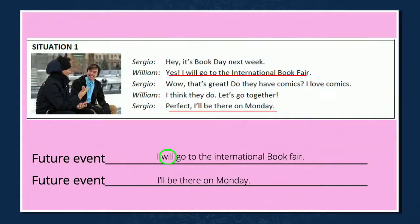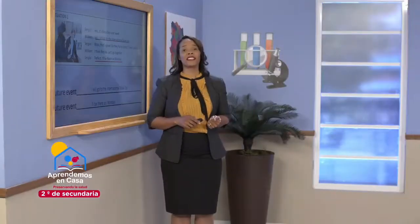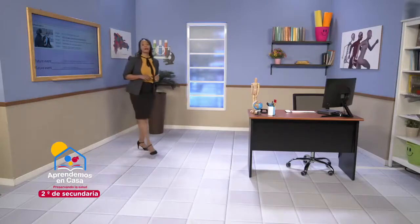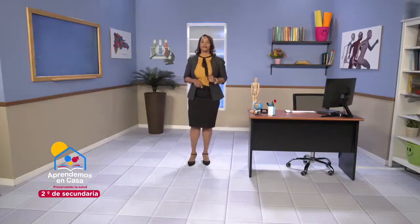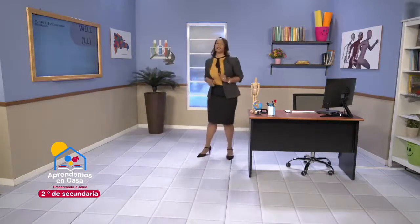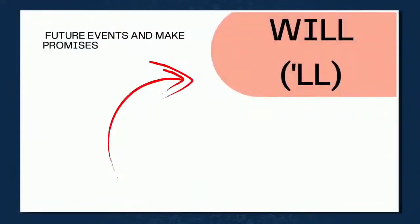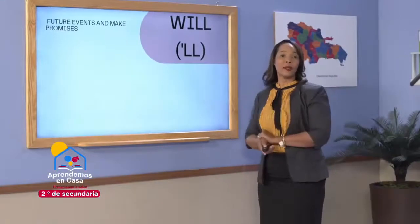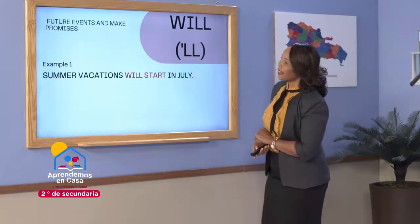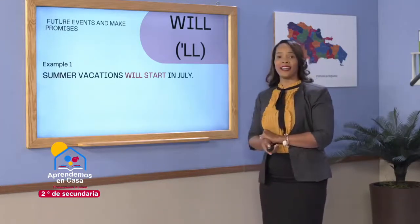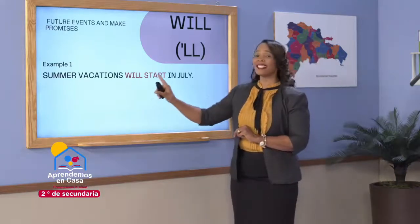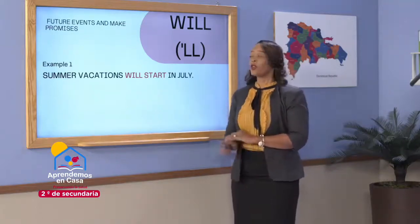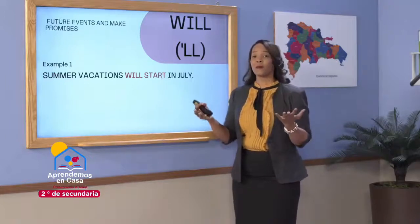Let's see a little bit more about how we can talk about future events and make promises — cómo podemos hablar sobre eventos futuros y hacer promesas. Look at the word on the top highlighted in pink: Will. This word is used in English to help the verbs express the future. Look at sentence number one: 'Summer vacations will start in July' — las vacaciones de verano empezarán en julio. 'Will' helps 'start' to be expressed in a future tense.